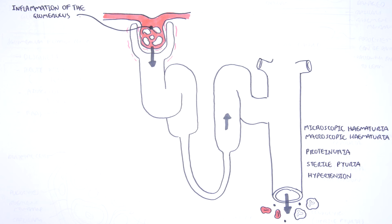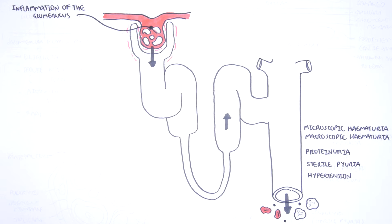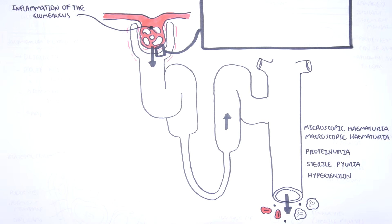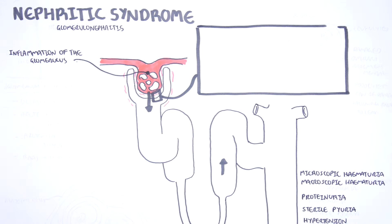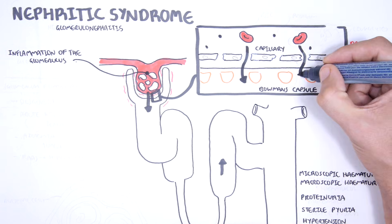It can be caused by a variety of conditions, including autoimmune, hereditary, and infectious diseases. Glomerulonephritis is not nephrotic syndrome. Inflammation of the glomerulus causes glomerulonephritis — nephritic syndrome — and this damages the glomerulocapillary. The porous basement membrane allows red blood cells to leak out, resulting in hematuria.